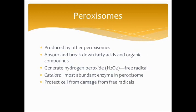Peroxisomes are produced by other peroxisomes — kind of a chicken-and-egg situation. They absorb and break down fatty acids and organic compounds, generating hydrogen peroxide through the breakdown of these materials, which is known as a free radical. The most abundant enzyme in peroxisomes is catalase, which helps break down free radicals and protect the cell from damage. In a way they are much like lysosomes, but very specialized in what they break down.